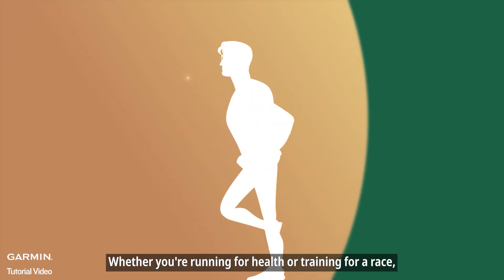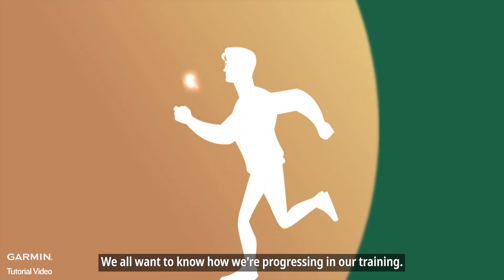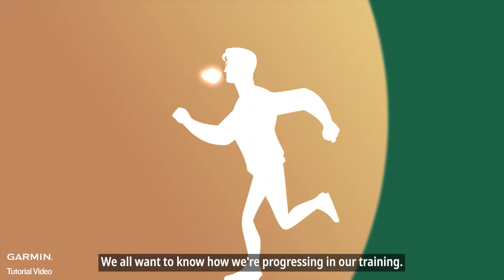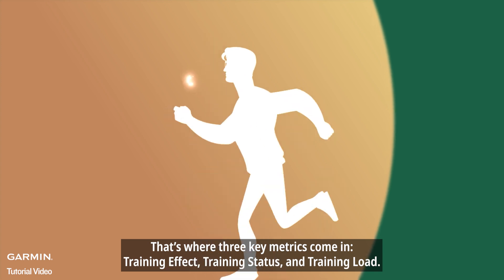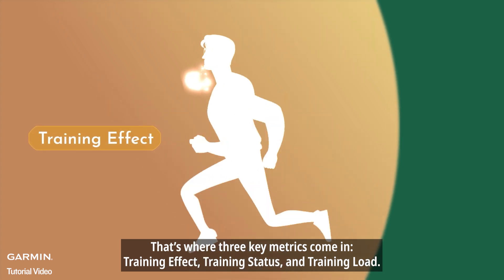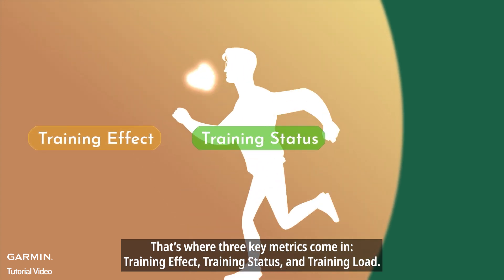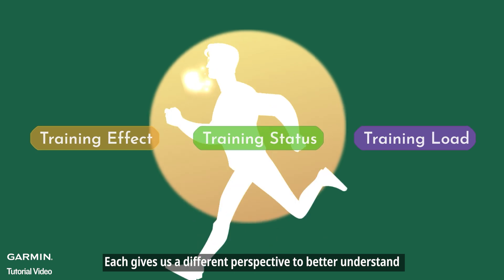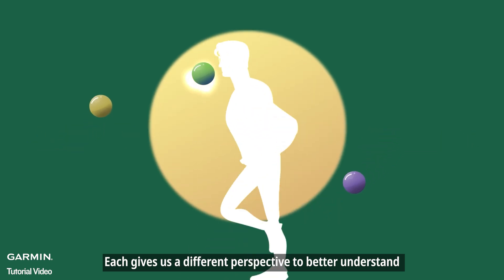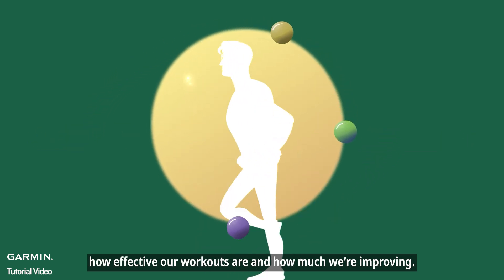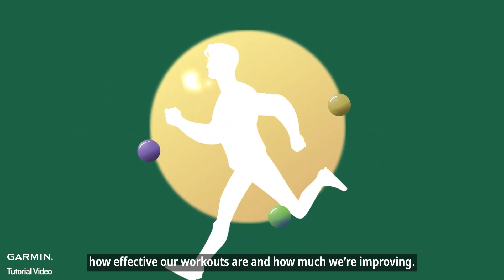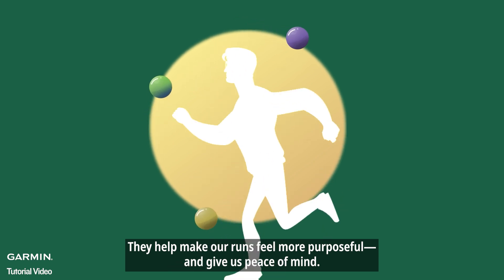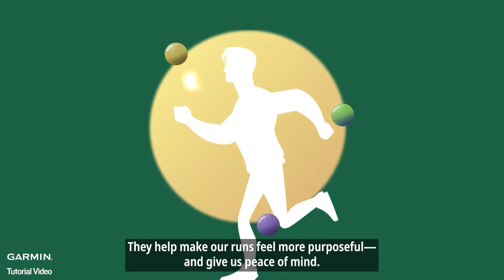Whether you're running for health or training for a race, we all want to know how we're progressing in our training. That's where three key metrics come in: training effect, training status, and training load. Each gives us a different perspective to better understand how effective our workouts are and how much we're improving. They help make our runs feel more purposeful and give us peace of mind.